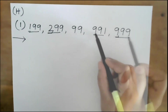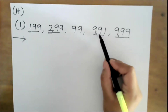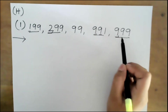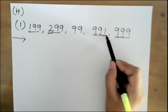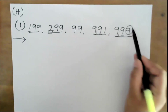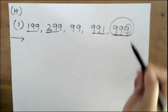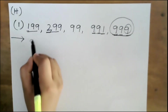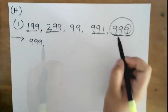Two of them have the same hundreds digit, so look at the tens place again — here 9 and here 9, the tens are also the same. So look at the ones place: here is 1 and here is 9. So 999 is bigger — this number comes first: 999.